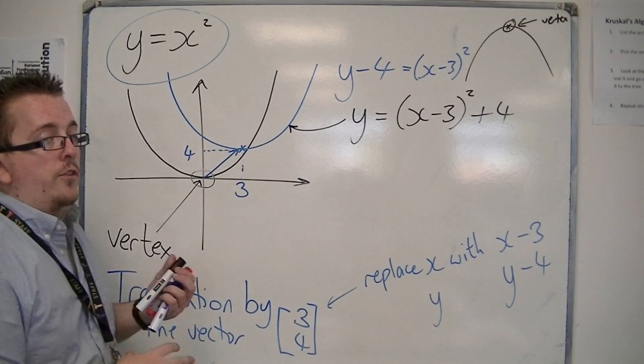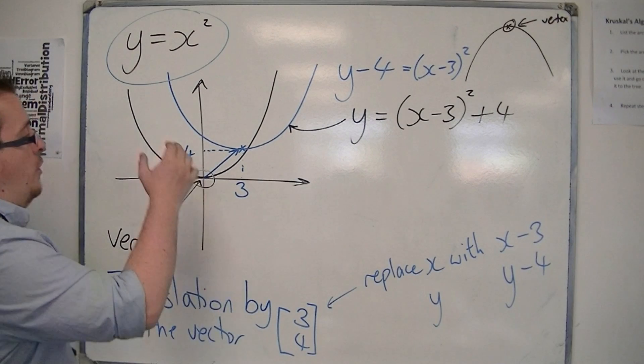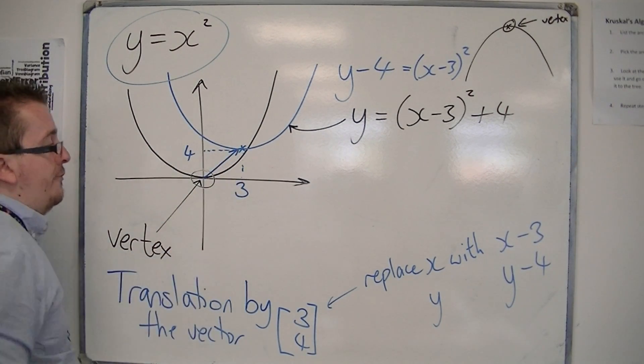And it has gone through this process. It's all about knowing where that vertex has moved to. It's gone from 0, 0, right at the origin, to now 3, 4.